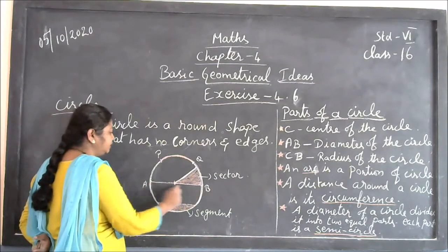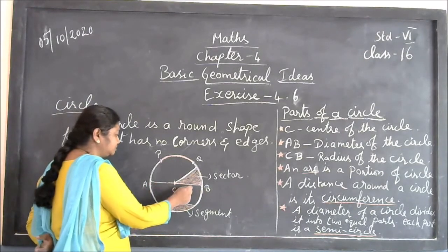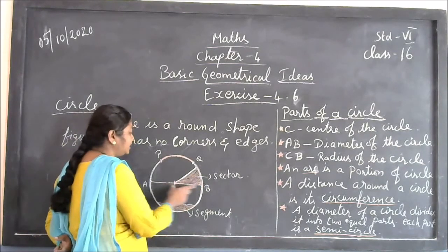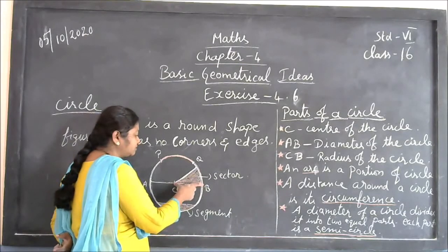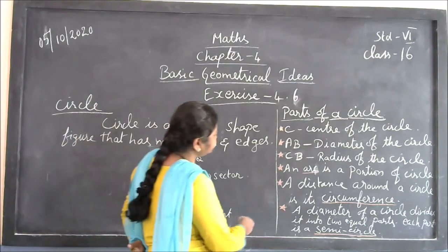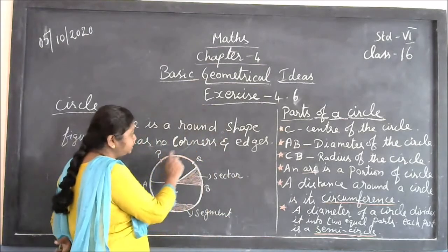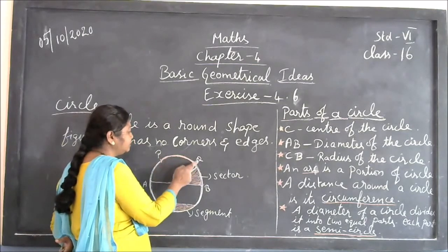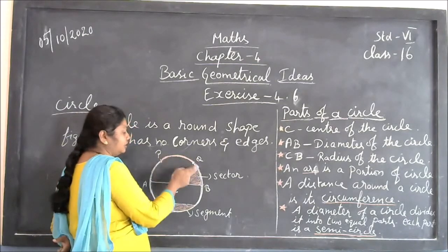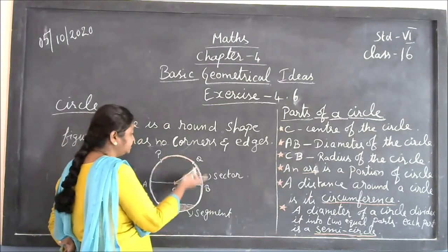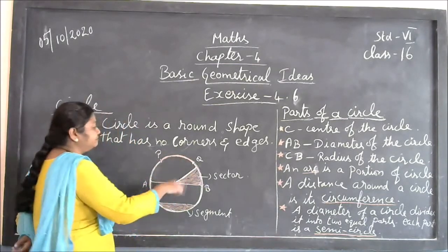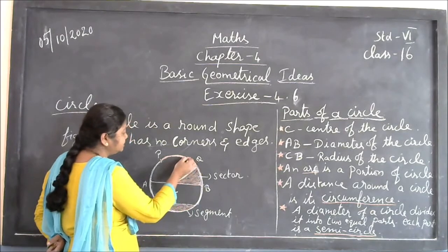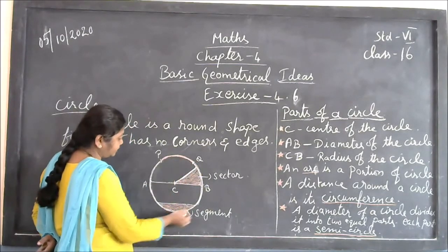If you divide the diameter into two equal parts, each part is the radius. The two halves should be equal — that is the center. This part is called the radius. The circumference is the outer boundary line of the circle — this line is called the circumference of the circle.